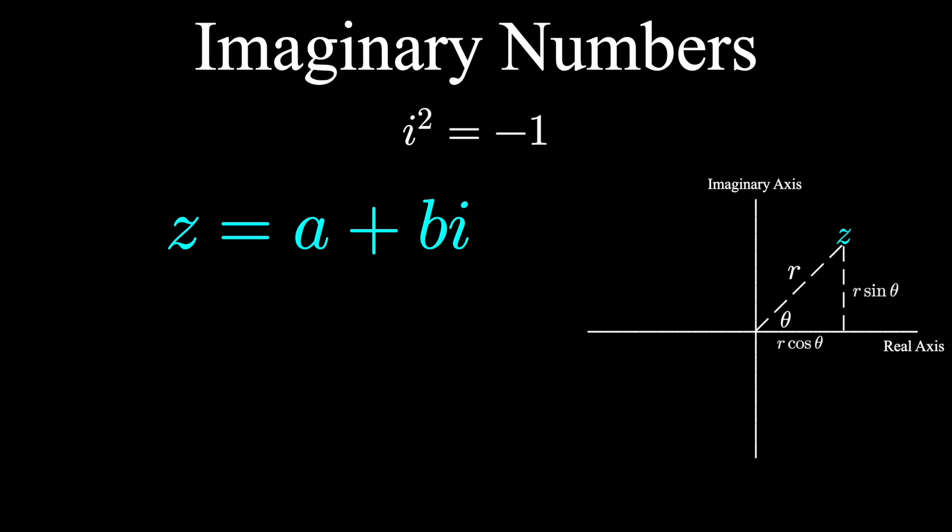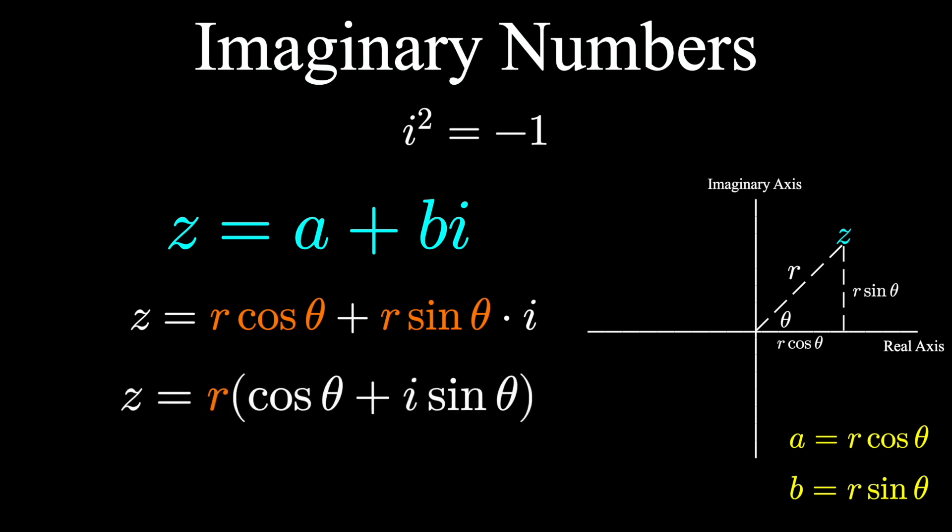We can factor out that r, which is the hypotenuse of the triangle, and hey, look at that—there's the famous Euler's formula: cos θ plus i sin θ is e to the iθ. So any complex number can be represented as r e to the iθ, r being the distance from the origin and θ being that angle measured counterclockwise from the positive x-axis.